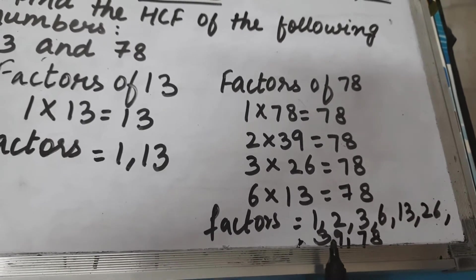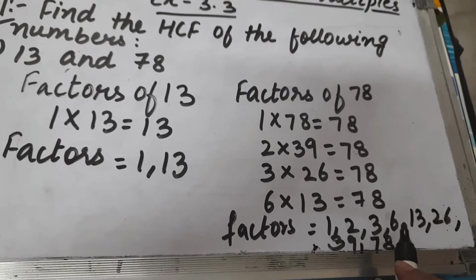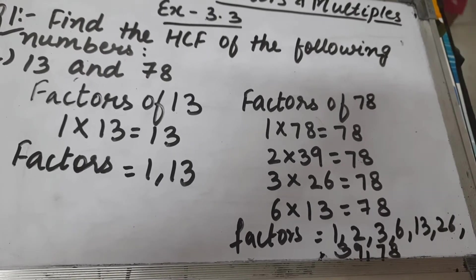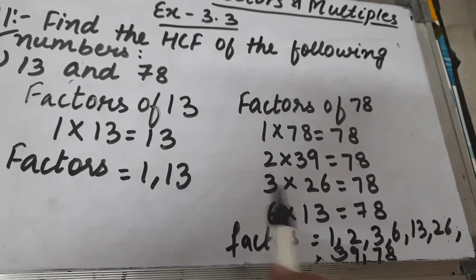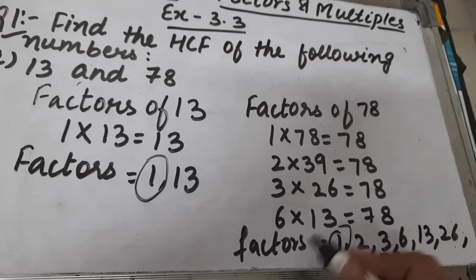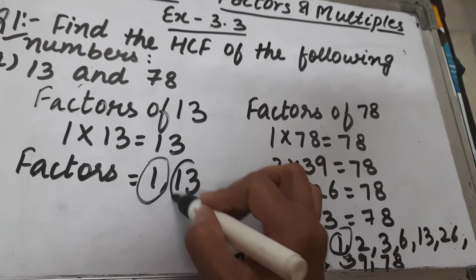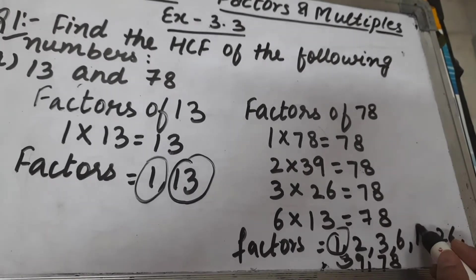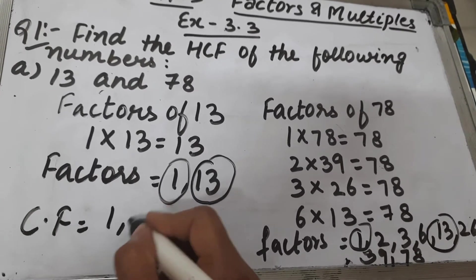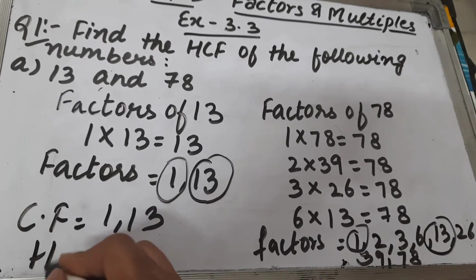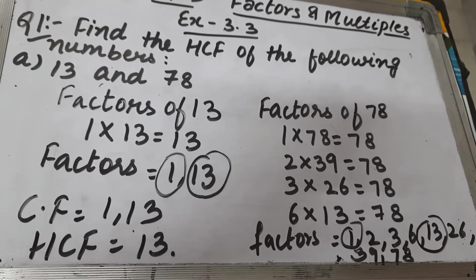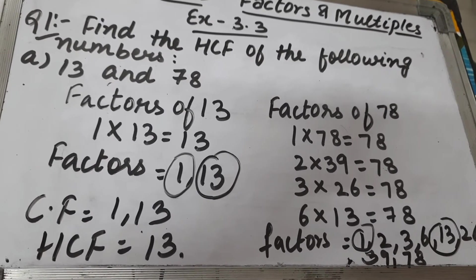So the factors of 78 are: 1, 2, 3, 6, 13, 26, 39, and 78. Now we write the common factors. 1 is in both 13 and 78, and 13 is also in both. So the common factors are 1 and 13. The highest common factor is 13, so HCF = 13.